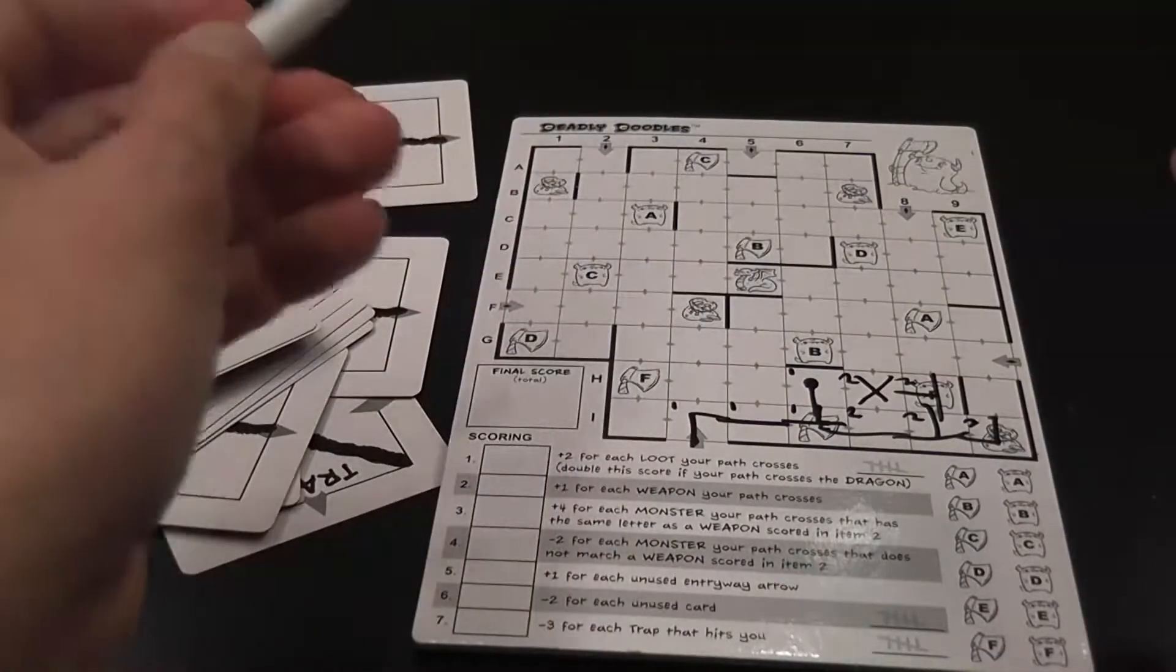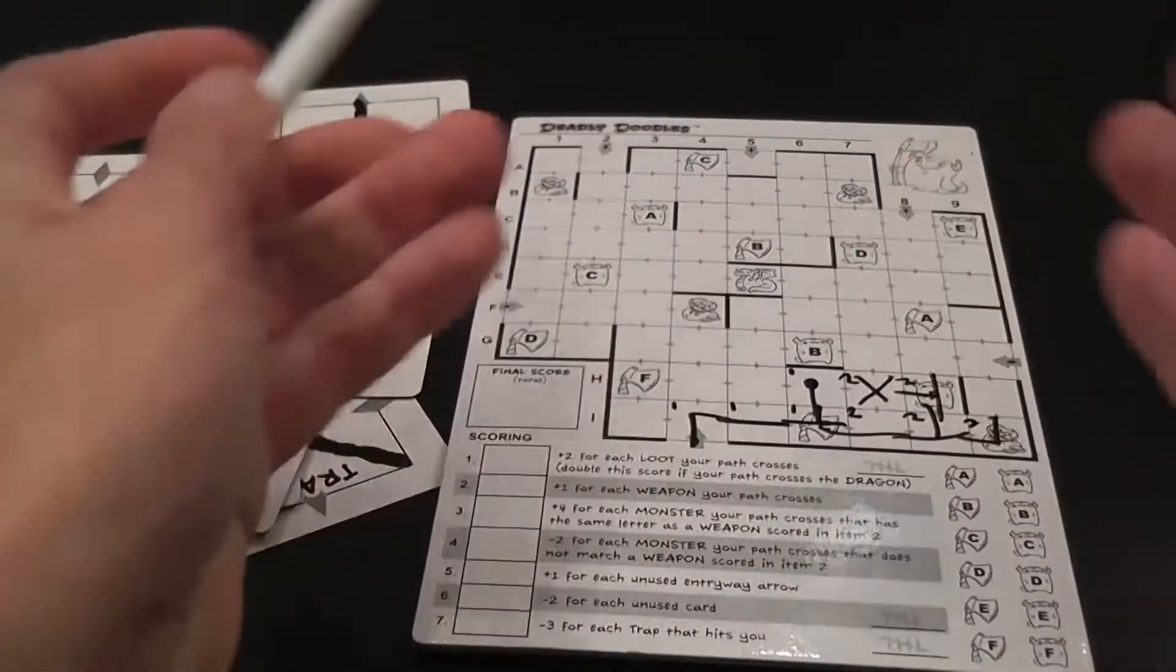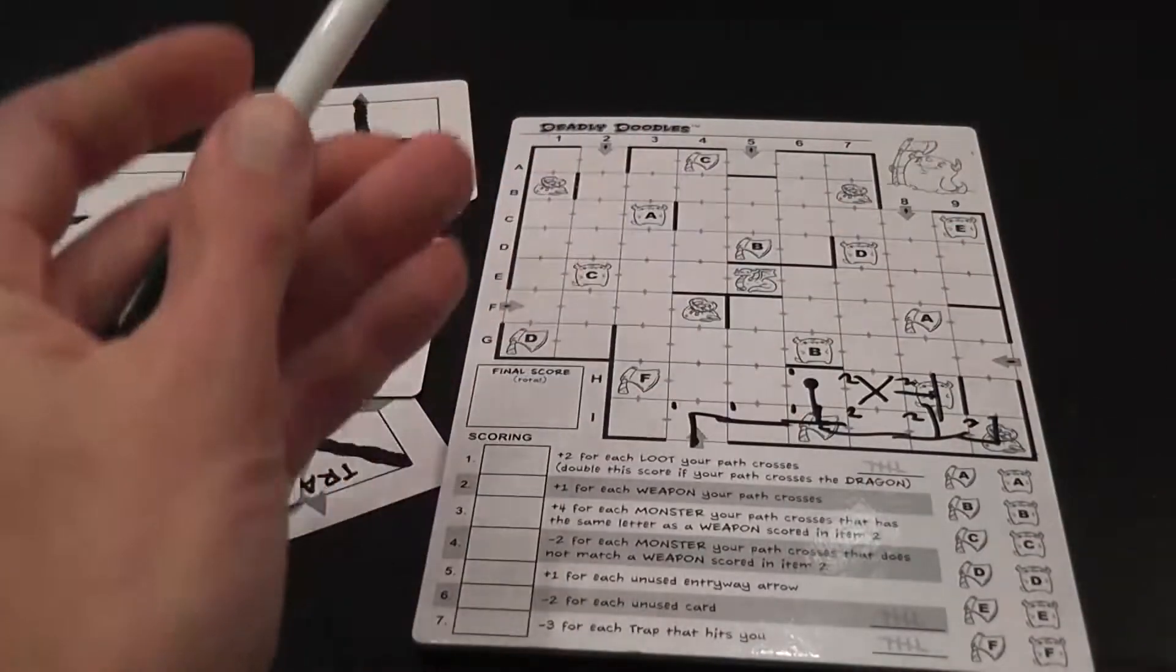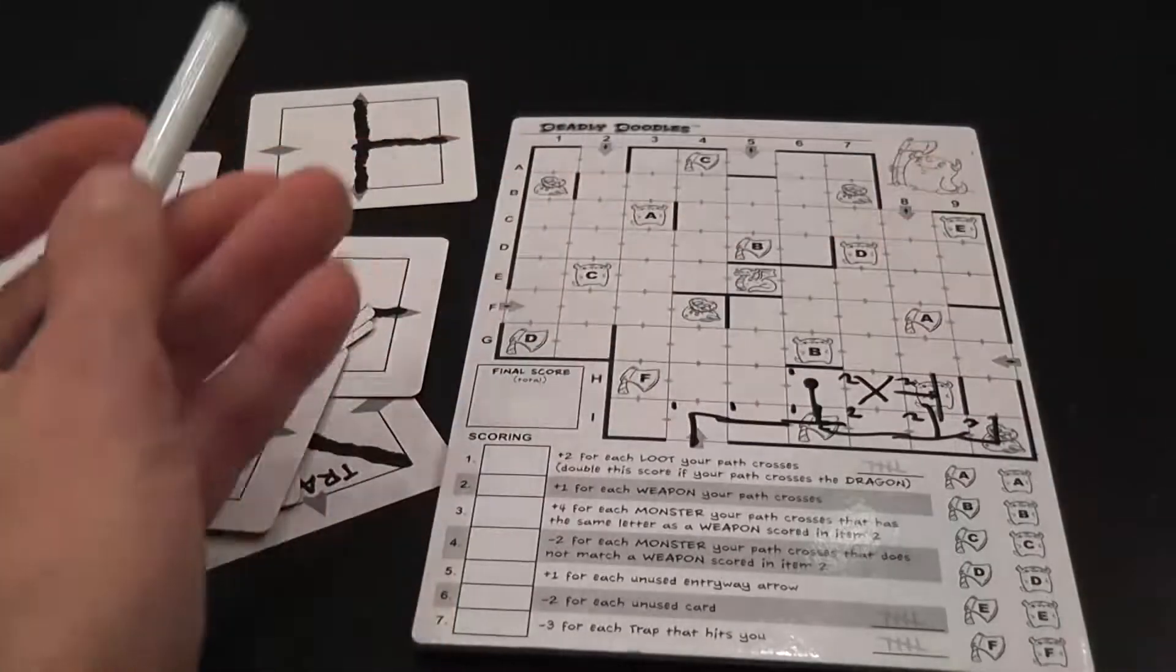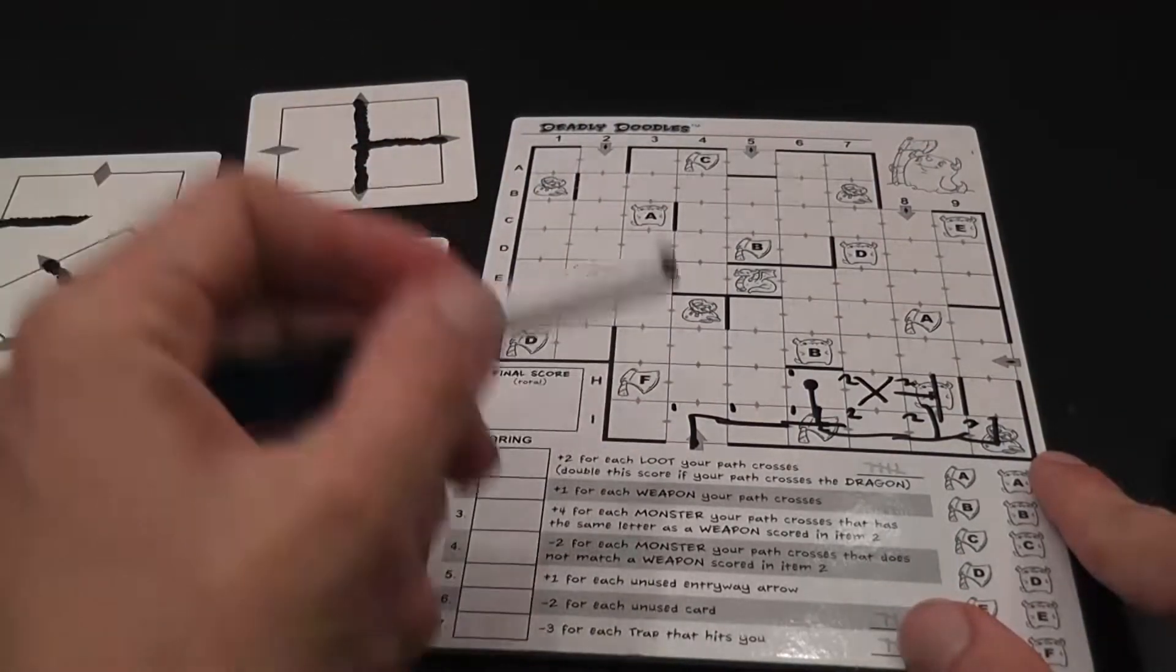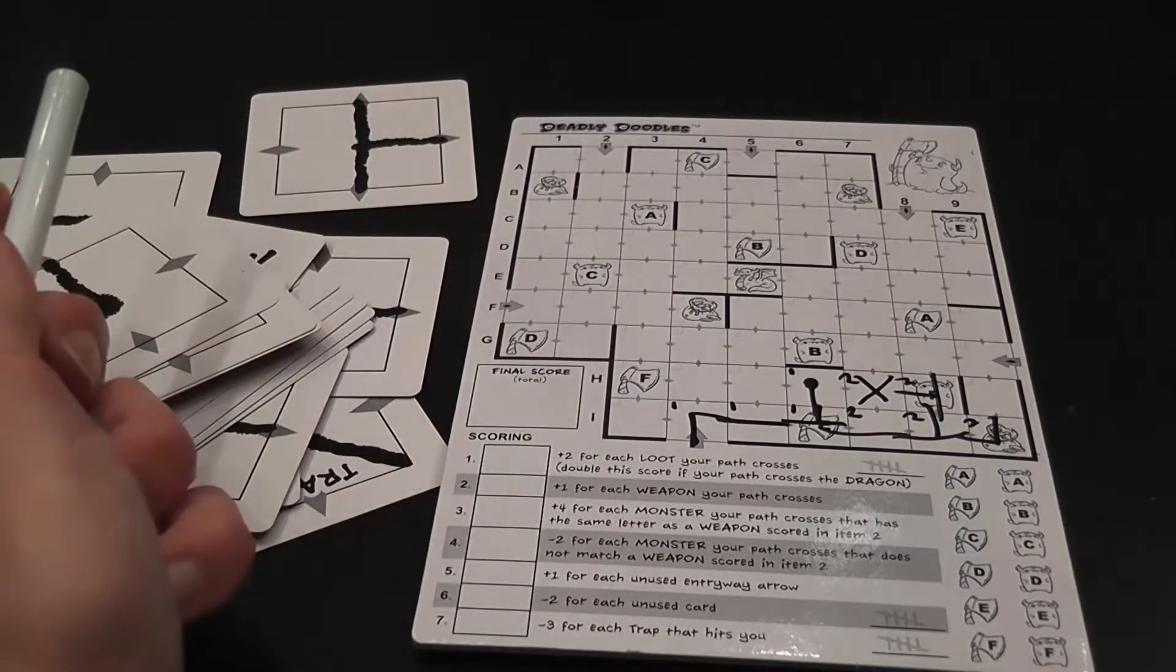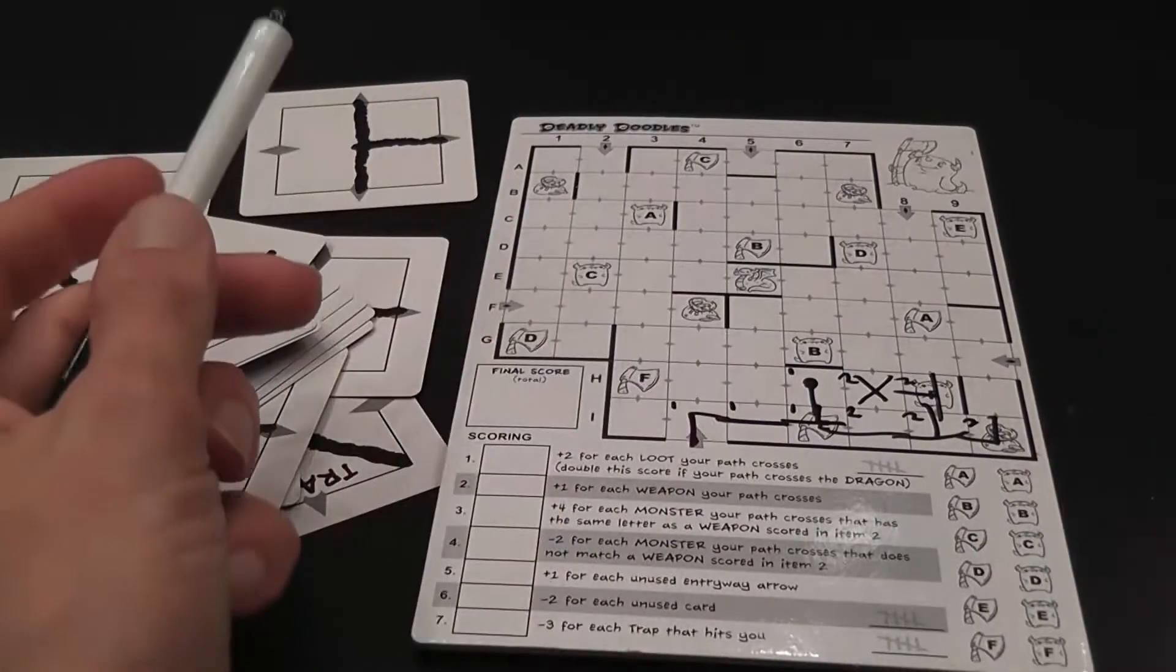Railroad Inc. has a whole other order of magnitude of fun to me, because there are just so many different strategies. You can change your strategy every time, the board can look vastly different. Here, more or less, you will use three or four entryways, you will try to hit three or four monsters, two or three bags of gold, try to get the dragon.